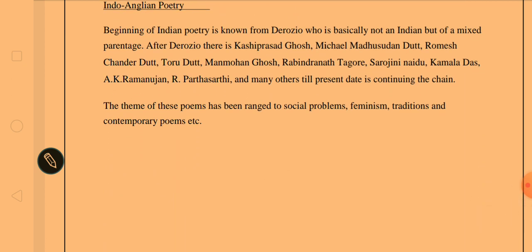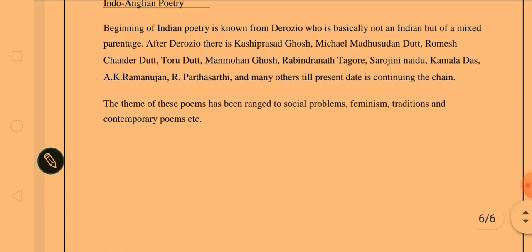Moving to Indo-Anglian poetry, the beginning of Indian poetry in English is traced to Derosio, who was not fully Indian but of mixed parentage. After Derosio came Kashi Prashad Ghosh, Michael Madhusudan Dutt, Ramesh Chandra Dutt, Toru Dutt, Manmohan Ghosh, Rabindranath Tagore, Sarojini Naidu, Kamala Das, A.K. Ramanujan, R. Parthasarathy, and many more. The themes of their poems range from social problems, feminism, traditions, casteism, poverty, and hunger to feminist views, as seen in the poems of Sarojini Naidu and Kamala Das.